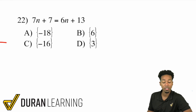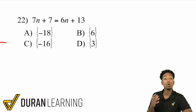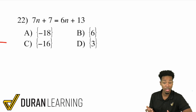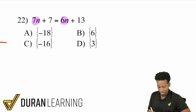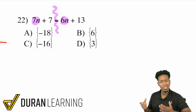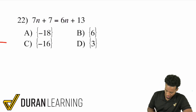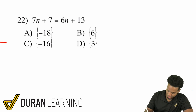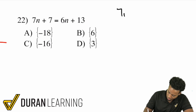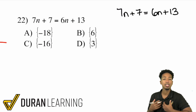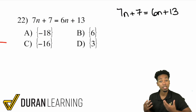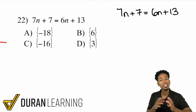We have 7n plus 7 equals 6n plus 13. Again, the goal here is to solve for n. But the slight little problem is that we have an n over here and an n over here — we have variables on both sides. So the goal here is going to be to get the variable by itself on one side. I'll utilize the idea that all I have to do is do the same thing to both sides.